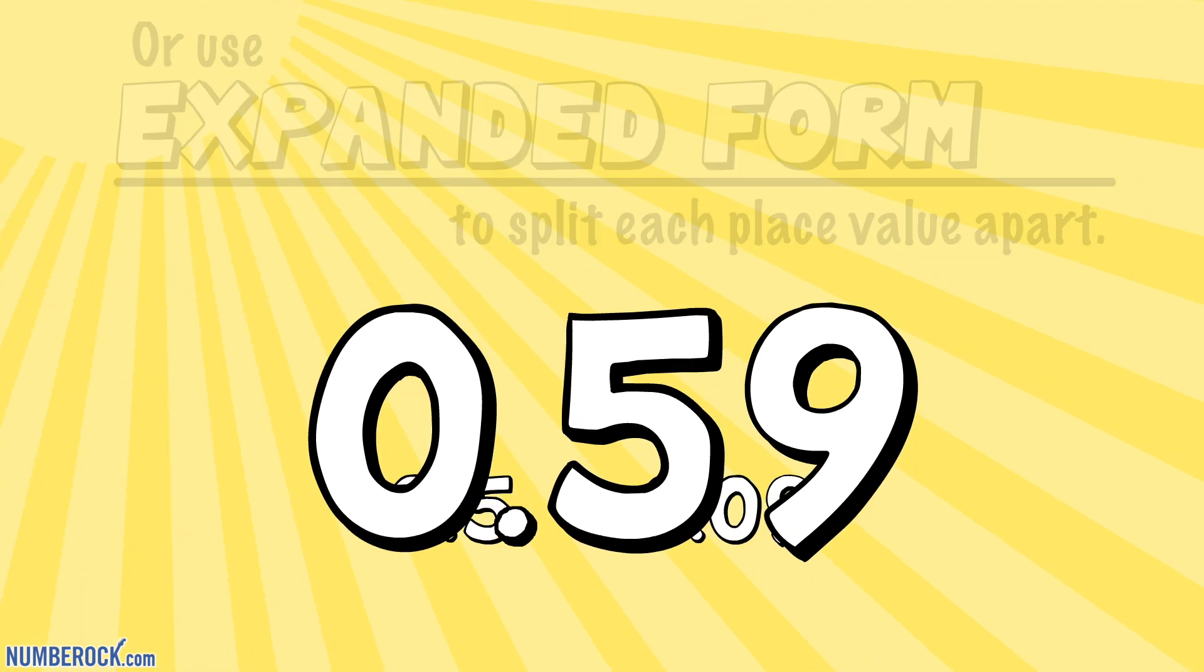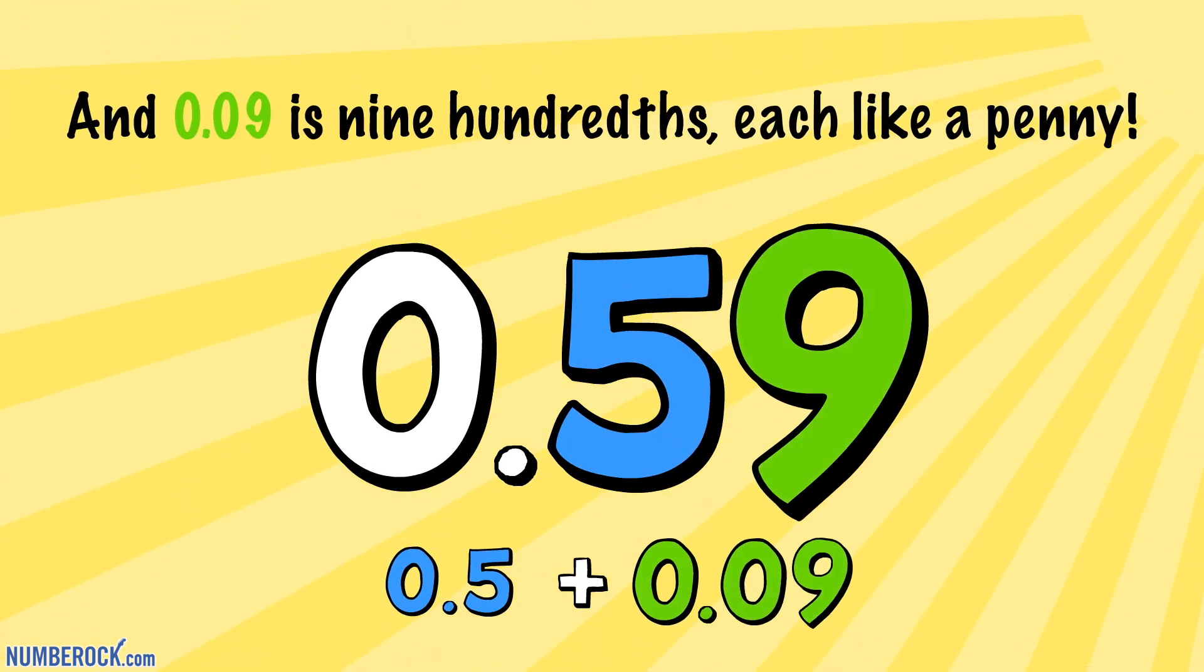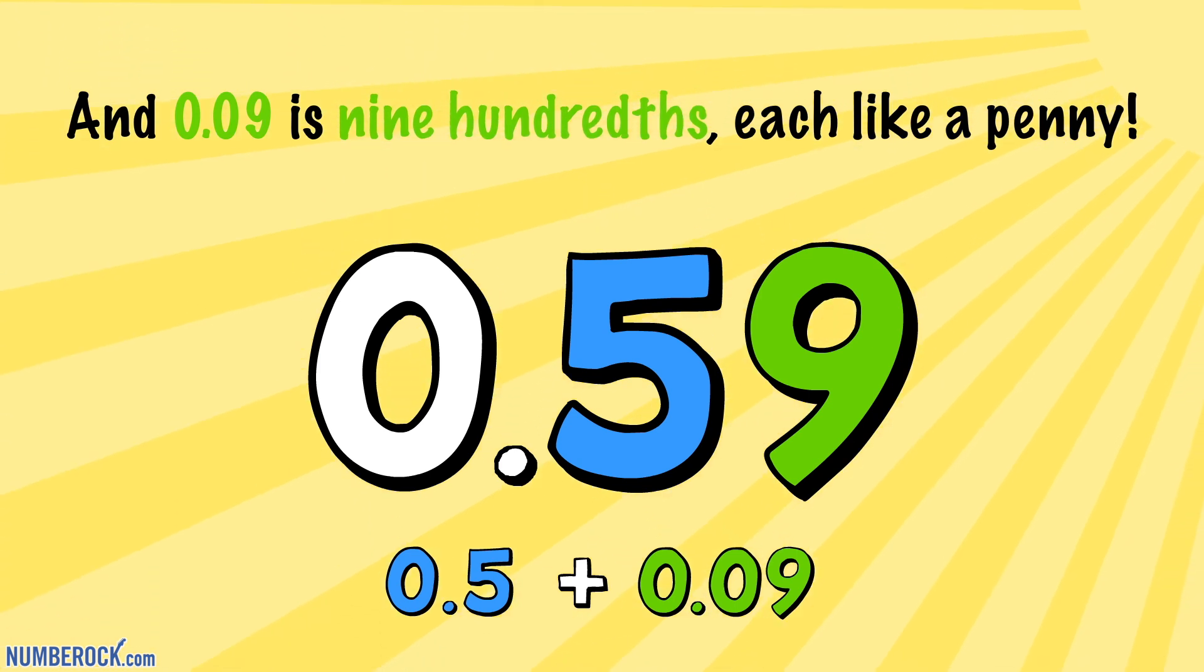Split each place value apart. 0.5 is 5 tenths, a half, don't you see? And 0.09 is nine hundredths, each like a penny.